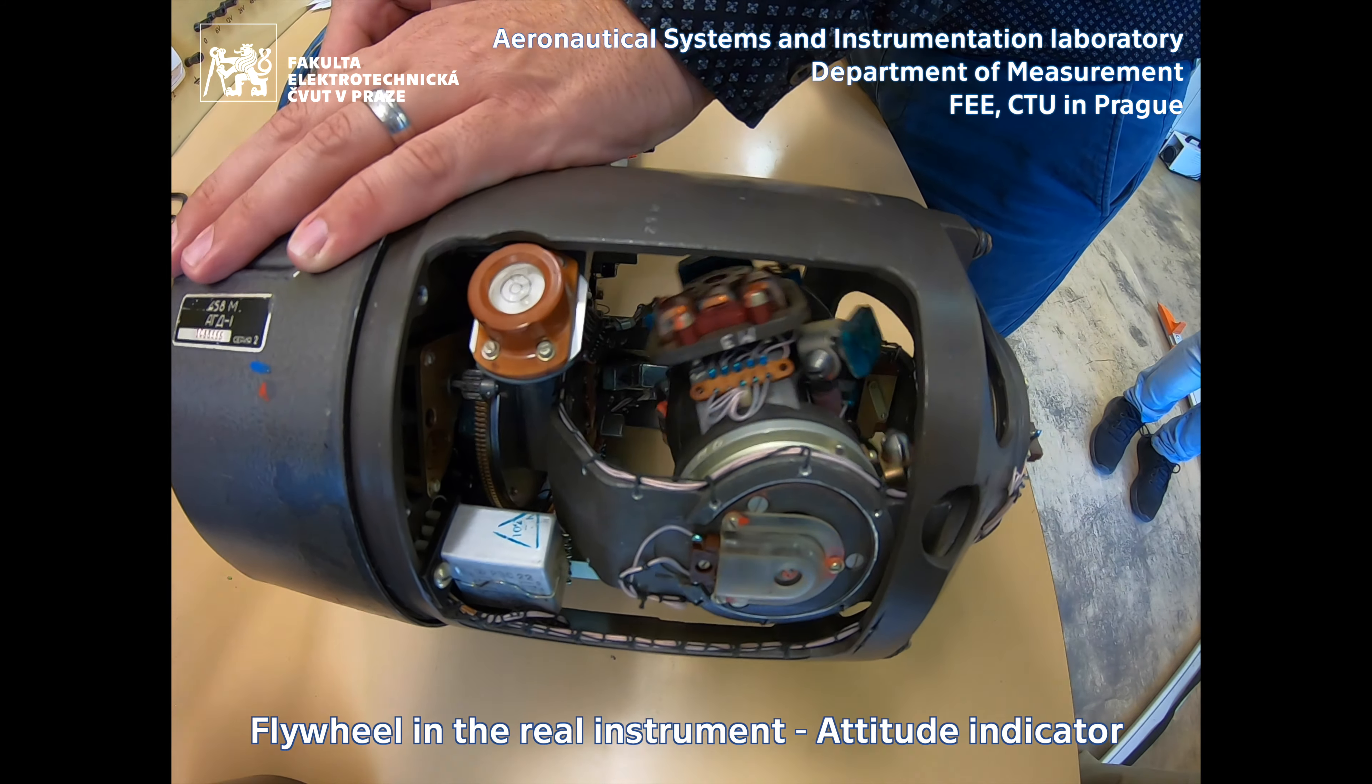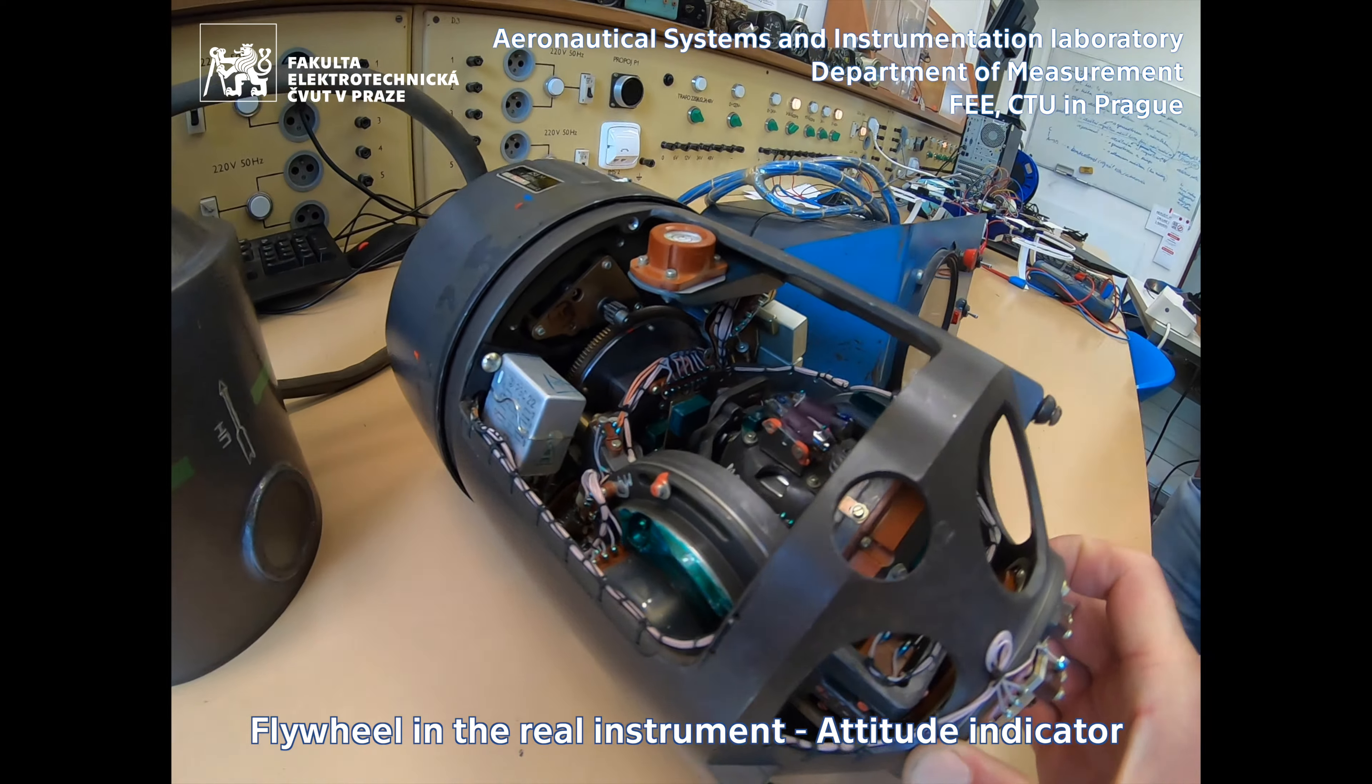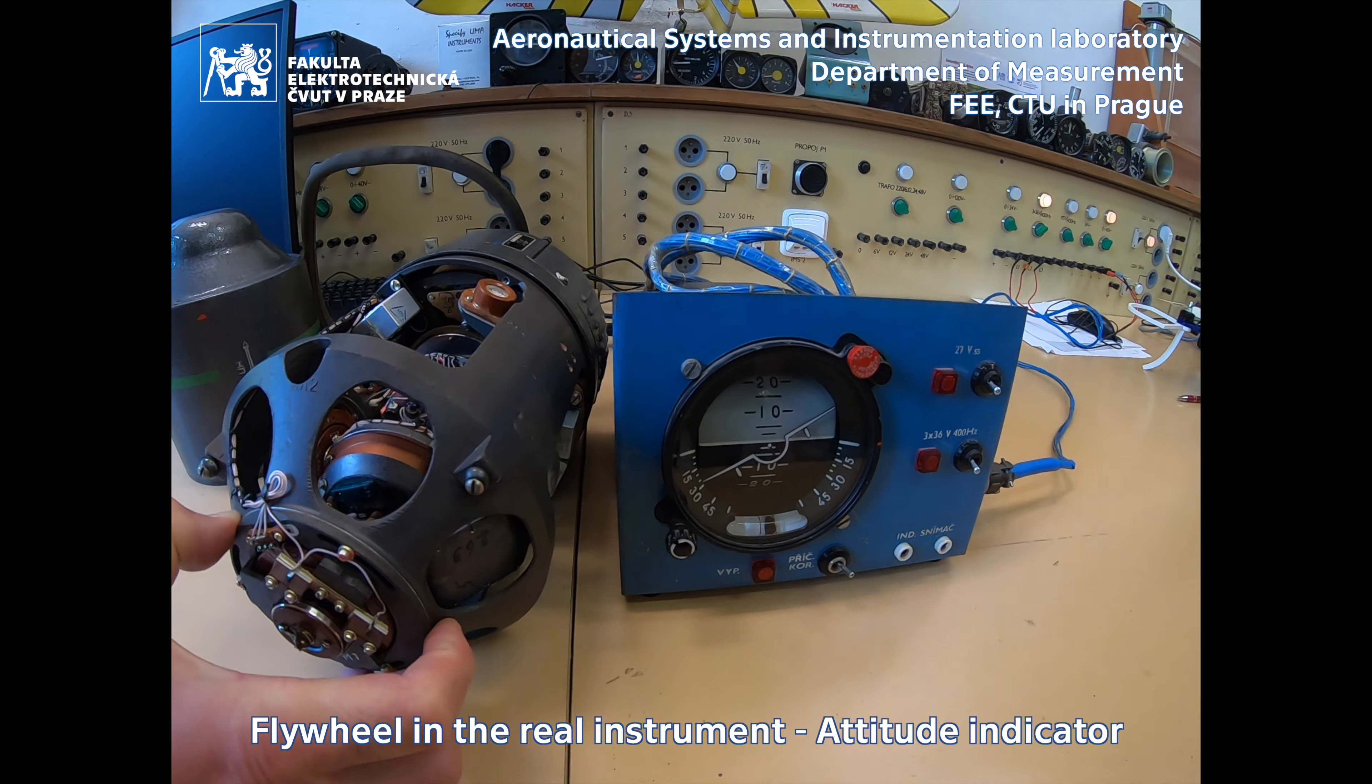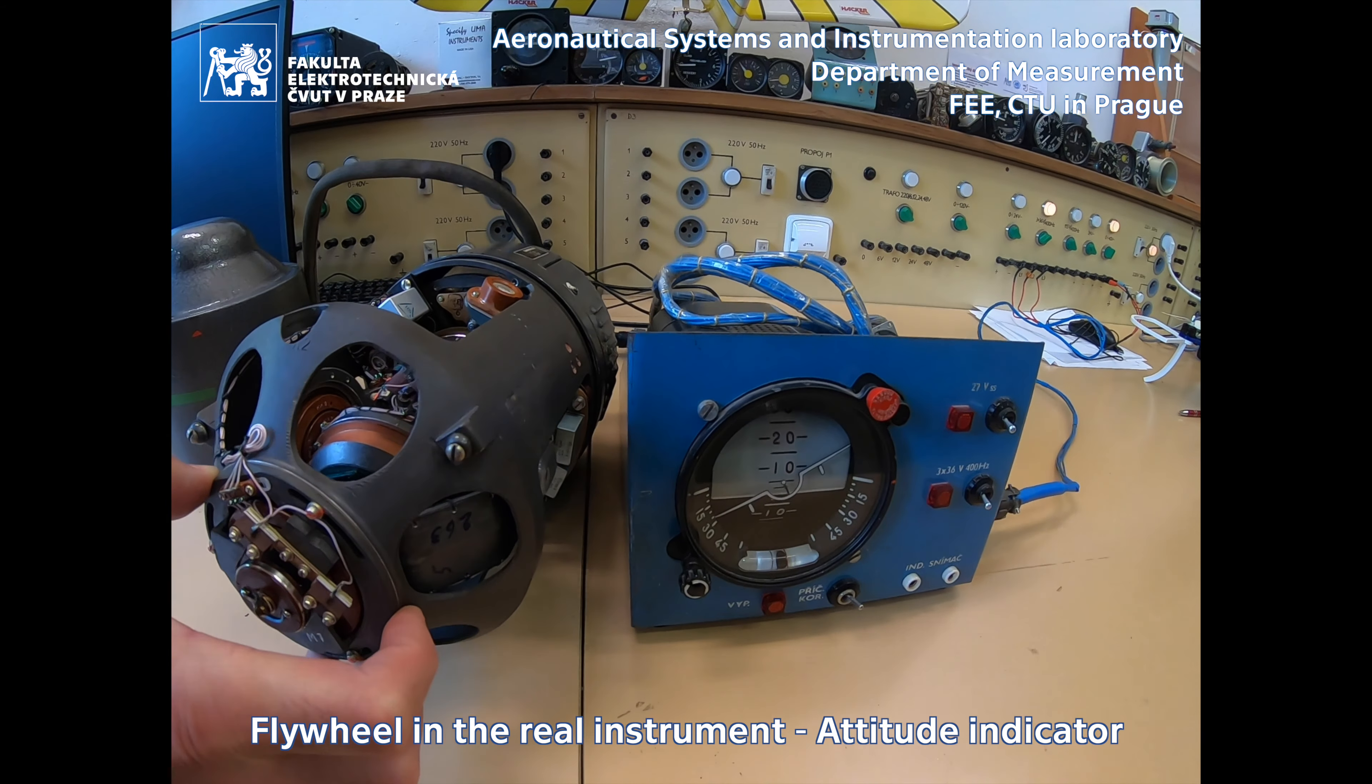Here you can see the very same flywheel embedded in the 3-gimbal system with a bunch of sensors and actuators and other electromechanical stuff. All together it helps the pilot to orient the aircraft properly.